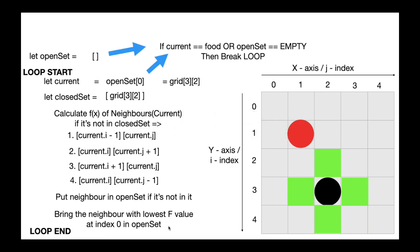When this loop breaks, we will backtrace the closed set array to find the path.